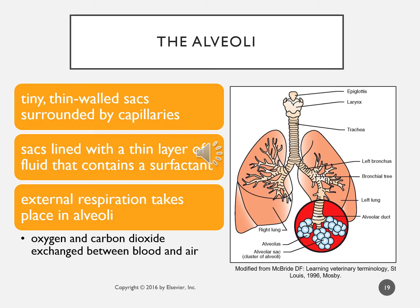The alveoli are tiny thin-walled sacs surrounded by capillaries, lined with a fluid called surfactant — a soapy substance that allows contraction and expansion so they stay expanded and don't collapse. External respiration takes place in the alveoli, where oxygen and carbon dioxide are exchanged between blood and air. The epithelium is only one cell layer thick, so exchange of CO2 and O2 can happen easily and freely.